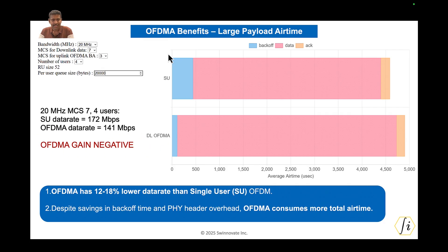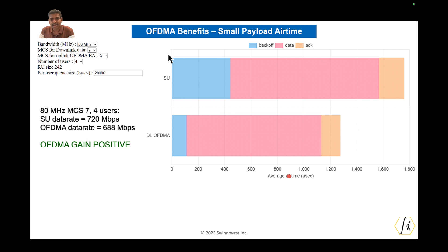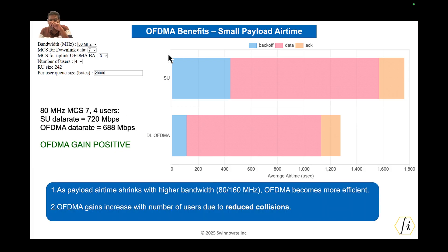Now let us look at the small payload air time scenario. Making one small change — instead of 20 MHz bandwidth, let us assume 80 MHz bandwidth for the access point. This means data rates are now four times higher, so for the same 20,000 bytes per user, the payload air time is going to shrink. We use RU242 for each of the users. Repeating the calculations, we see that OFDMA in this case consumes significantly less air time compared to single user — single user takes about 1750 microseconds whereas OFDMA takes only about 1300 microseconds. This is despite the reduced OFDMA data rate due to null tone overhead. So in the small payload air time scenario, OFDMA is definitely beneficial.